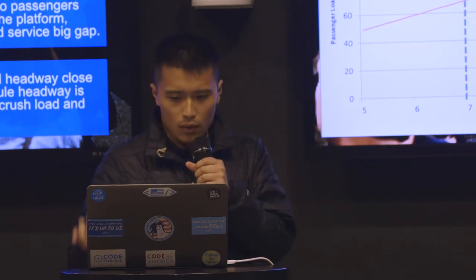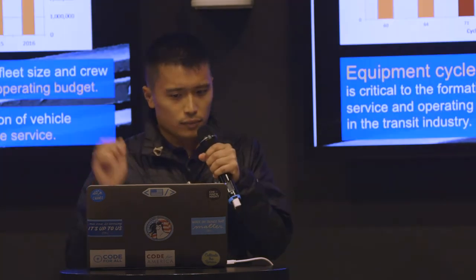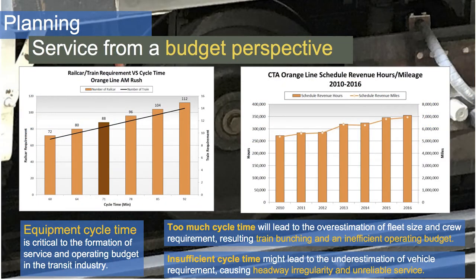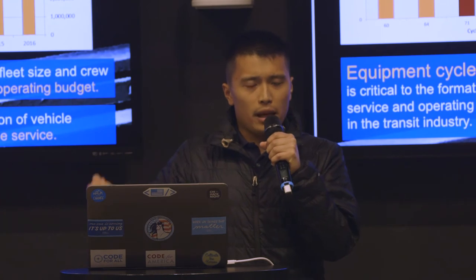We have a good idea of what needs to be done using ridership data, but the question is how do we do this, and I want to touch on the budget perspective. From a service provider perspective, we need two things to provide service: manpower and equipment. The planning department is in charge of estimating how many of each we need. One of the most important questions we need to study is what we call the cycle time. This is an example for the orange line — cycle time is defined as running time plus layover time.